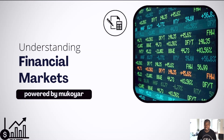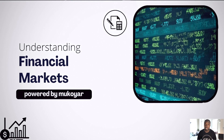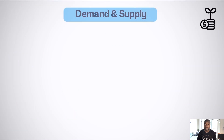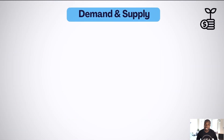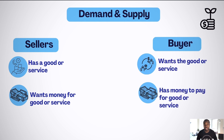Understanding financial markets begins with the understanding of the basic economic concept of demand and supply. This concept shows the relationship between two parties: a seller who has a product or a service and wants to sell at a certain price, and a buyer who needs the product and is willing to pay that price for it.